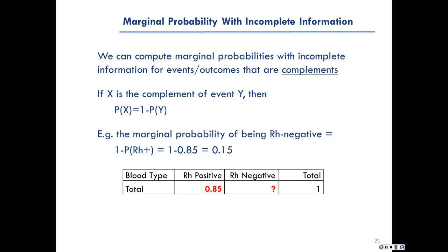We can also compute marginal probabilities with incomplete information for events that are complements. If X is the complement of the event Y, then the probability of X equals 1 minus the probability of Y. For instance, the marginal probability of being RH negative equals 1 minus the probability of being RH positive, which is 1 minus 0.85, giving us the result of 0.15.